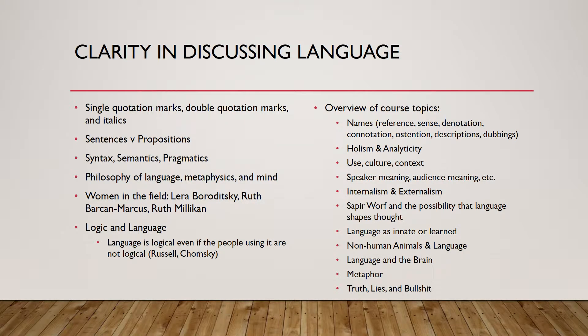Here are some introductory things that everybody needs to know. We did discuss this when we met last Tuesday, but if you weren't there or if you'd just like a review, here it is. First of all, get used to the idea that using single quotation marks indicates the word itself. So the word 'word' has four letters, or the word 'hell' has four letters — these four-letter words are indicated to be words by the single quotation marks.